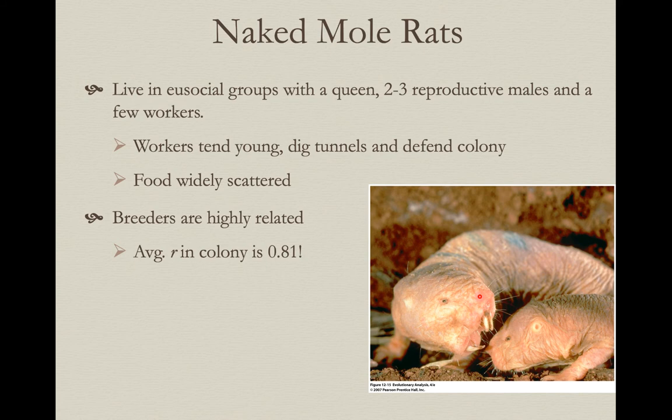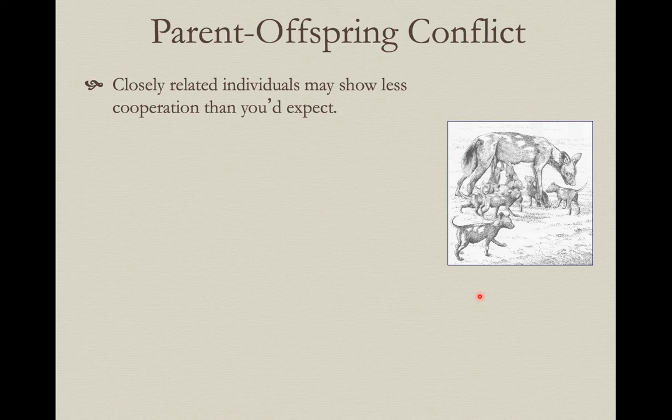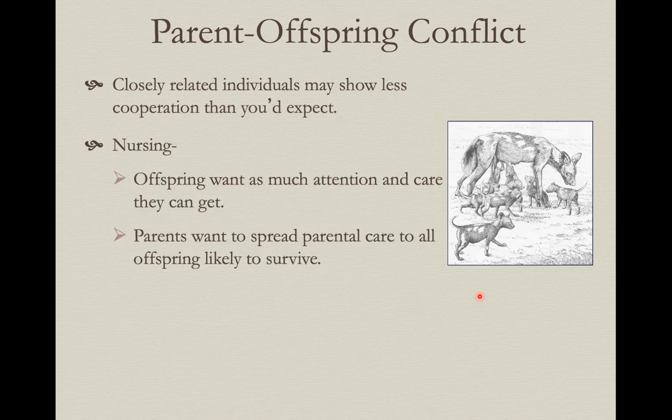Sometimes individuals living in groups you'd expect to show high cooperation still show conflict. For example, in mammals, nursing mothers have conflict with their own offspring. A mom with a large litter may want to spread milk equally among all offspring likely to survive, maximizing her direct reproductive success. But each individual offspring wants the lion's share of that milk — because the fatter and healthier they are, the faster they grow and the better their likelihood of survival, perhaps at a cost to their siblings.